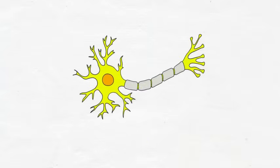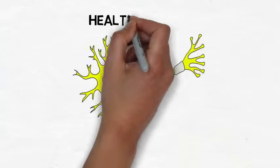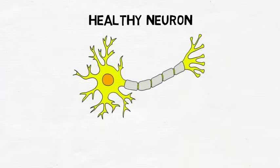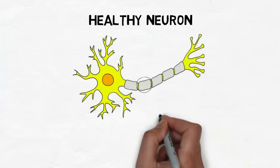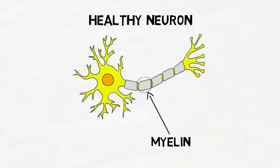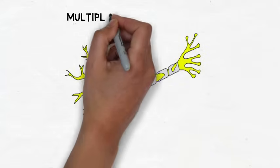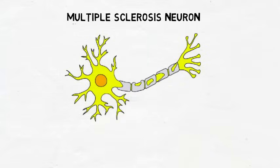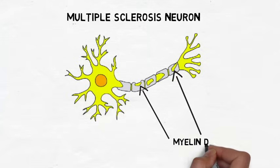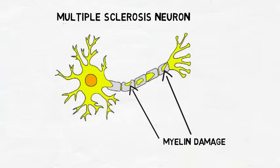Multiple sclerosis is characterized by damage to the myelin sheaths surrounding the axons of neurons in the central nervous system. This myelin damage disrupts the conduction of action potentials along these axons, which is thought to cause many of the symptoms of the disease. The myelin damage can also lead to the deterioration of axons.